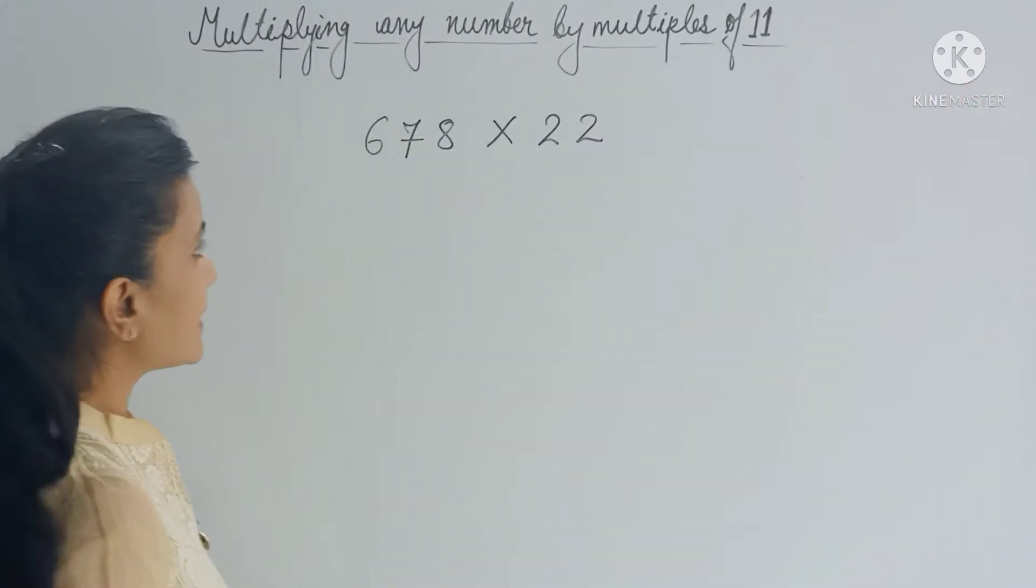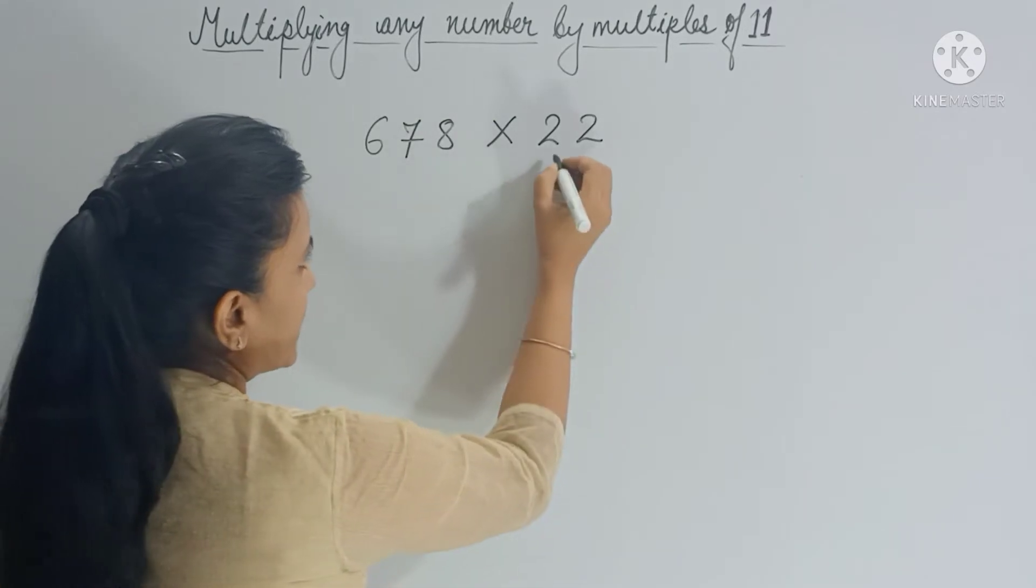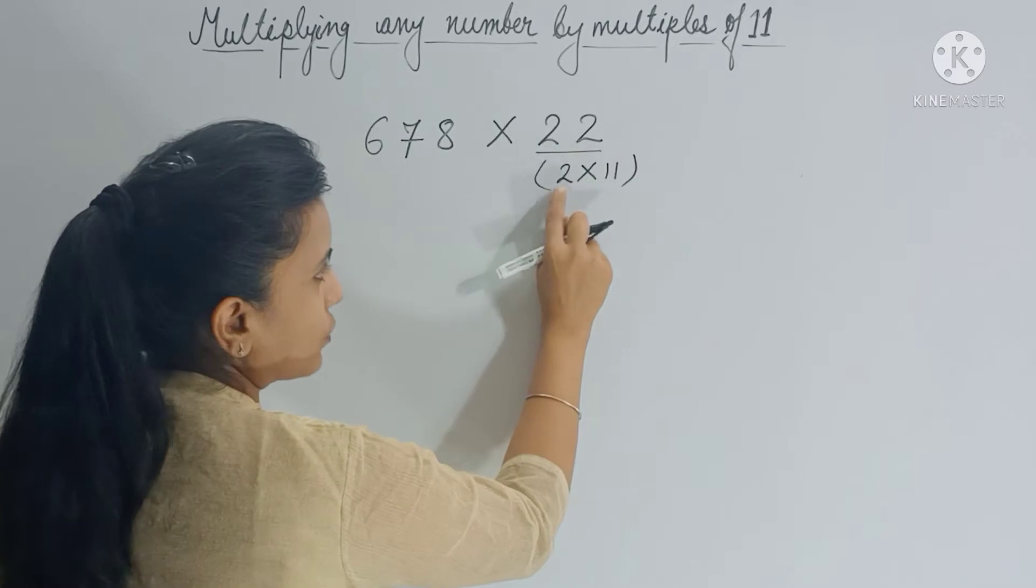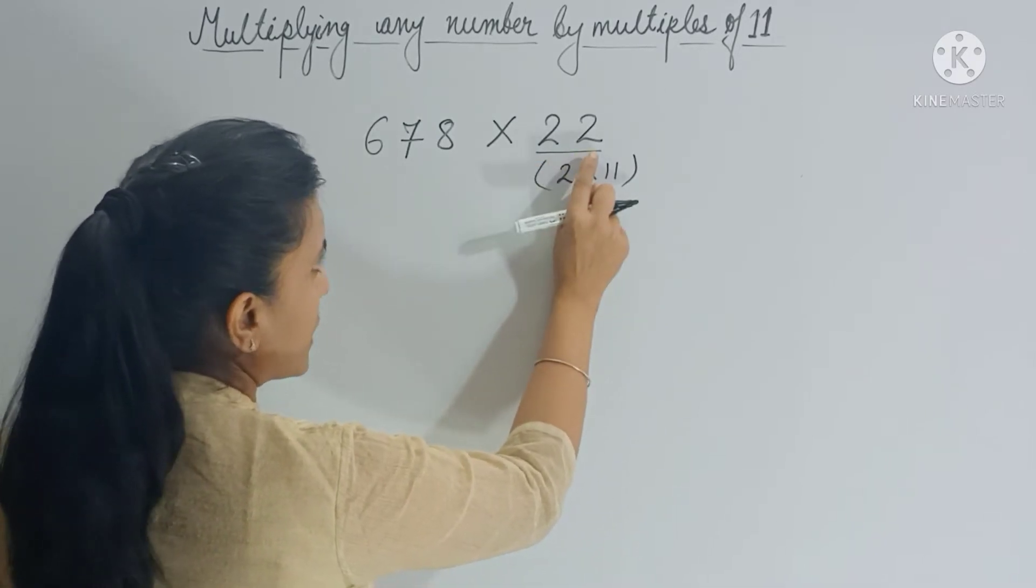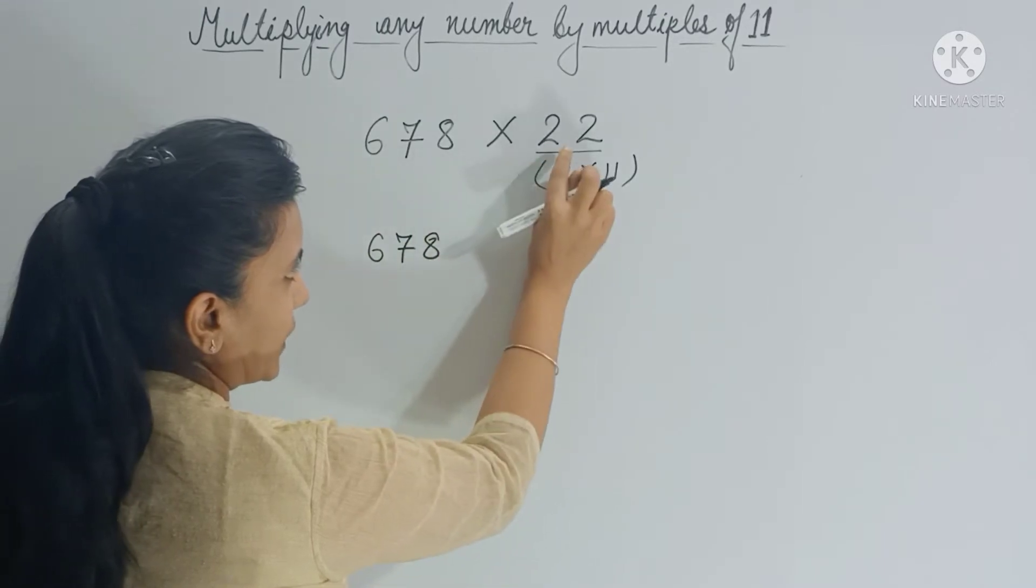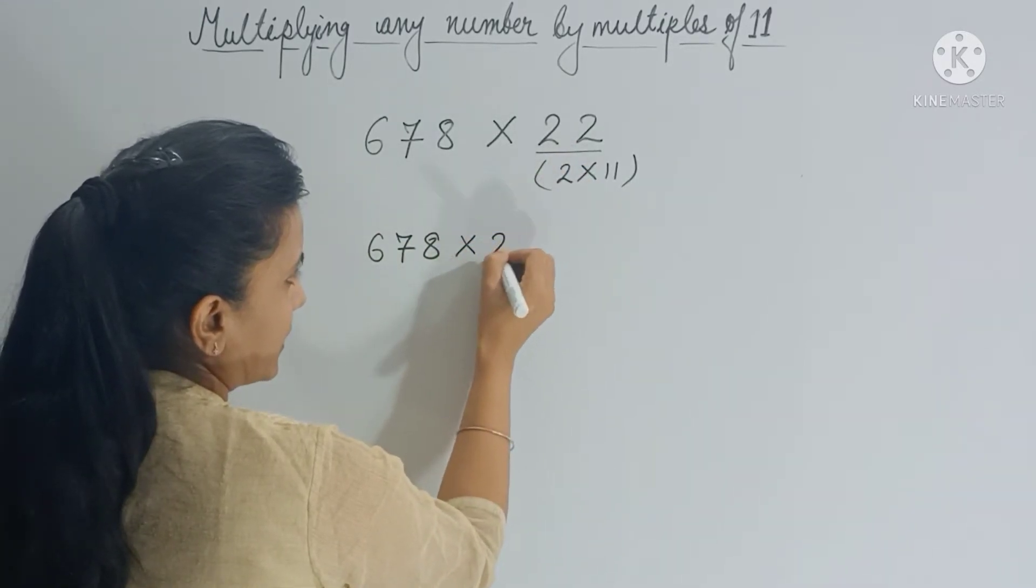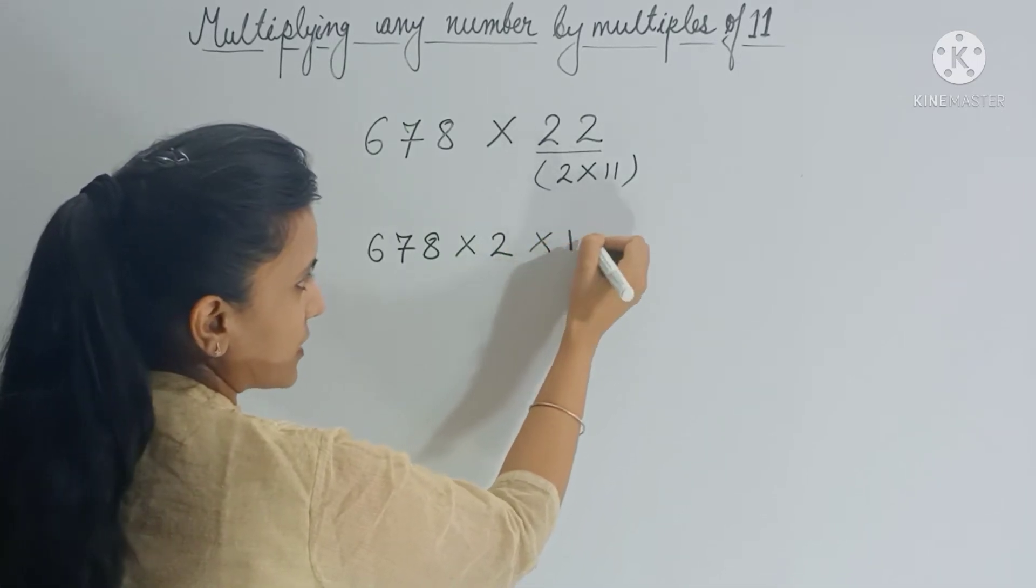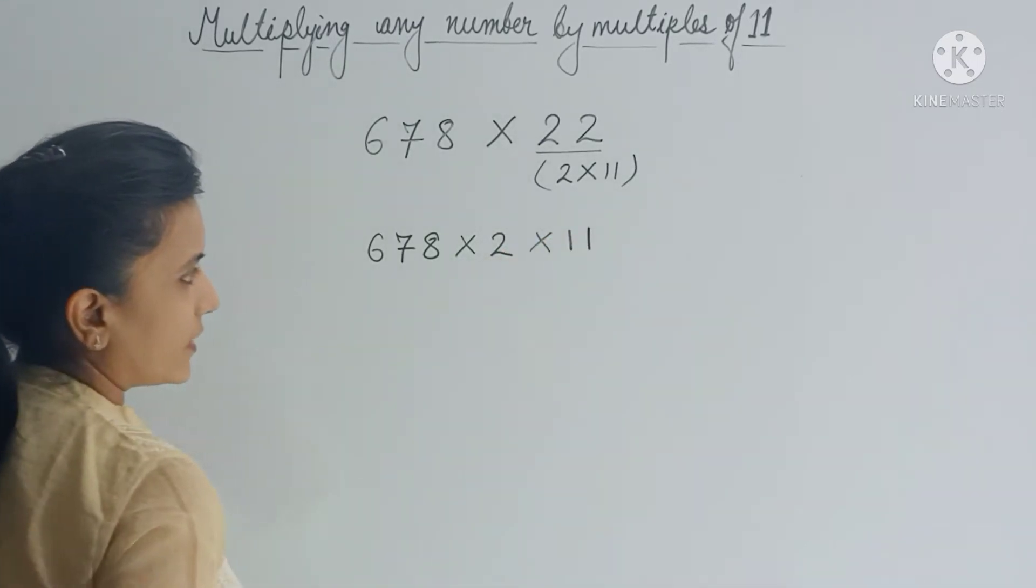Let's multiply 678 from 22. So here, this 22 can be written as 2 multiply 11, right? So instead of multiplying 678 from 22, I can multiply 678 from 2, and the result, the product which I will get, I will multiply with 11. So let's multiply these two.